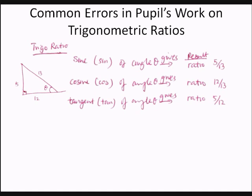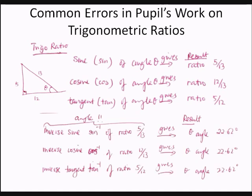The tangent of angle theta gives the ratio 5 over 12. On the other hand, the inverse sine of the ratio 5 over 13 gives the angle theta, which can be found from the calculator as 22.62 degrees. The inverse cosine of 12 over 13 and the inverse tangent of 5 over 12 also give angle theta — 22.62 degrees as well.